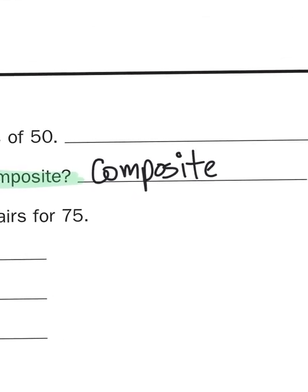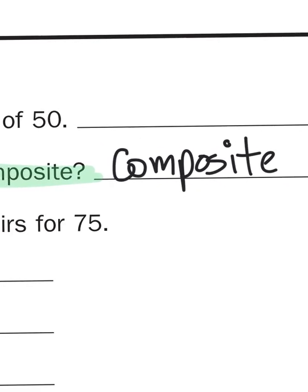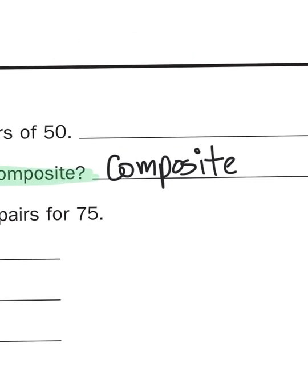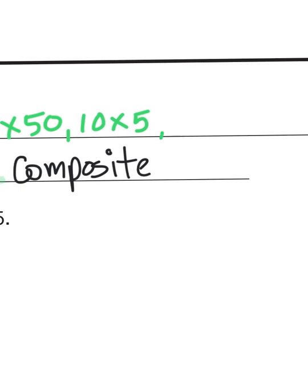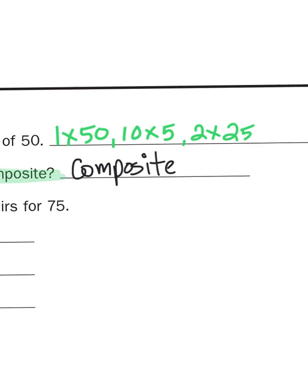So, now we have to figure out what are the factor pairs. Well, we've already hinted to a few of them. One would be the number times one. One times 50. We also talked about 10. 10. What times 10 gives me 50? Well, that would be 5. 5 times 10. We also said that 50 was composite because it's an even number. So, we know that 2 is a factor. How many groups of 2 can I get out of 50? Well, how many quarters is 50 cents? Well, that would be 2 quarters or 2 groups of 25.